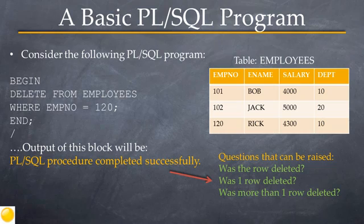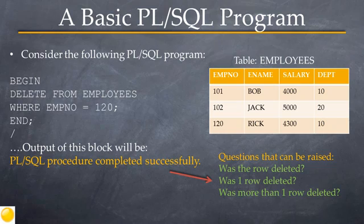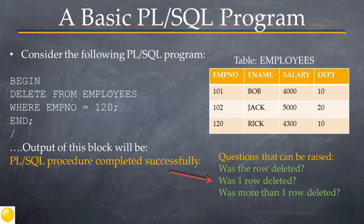To understand the behavior and use of the SQL cursor, consider the following slide. First, look at the data in the employees table. There are four columns: EMPNO, ENAME, salary, and DEPT — standing for employee number, employee name, salary of the employee, and the department the employee belongs to. Notice that there are three rows in the table. Specifically observe the last row where the employee number is 120 and the name is RIC.